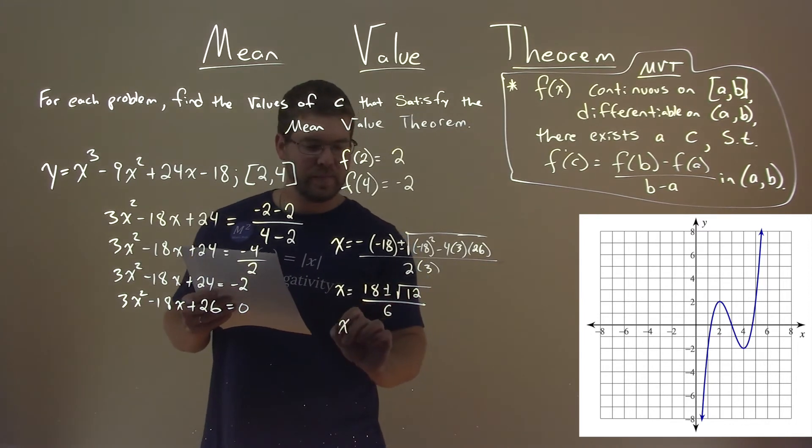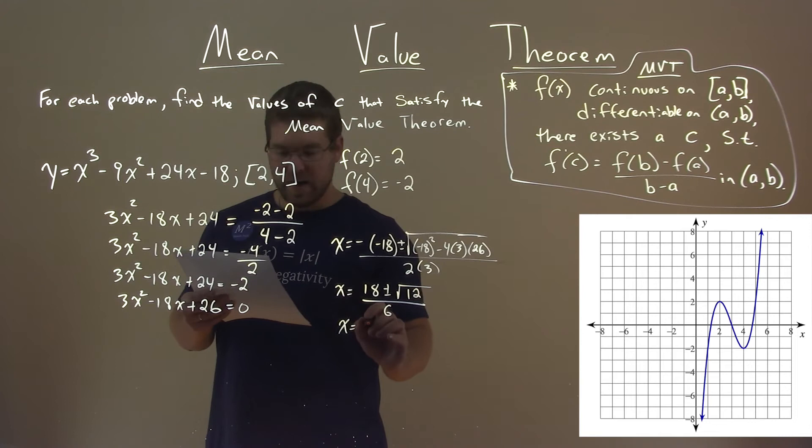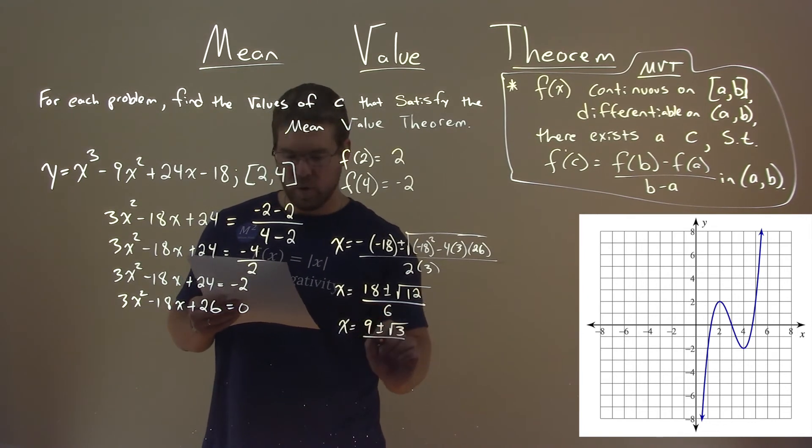This simplifies to be x equals 9 plus or minus the square root of 3 over 3.